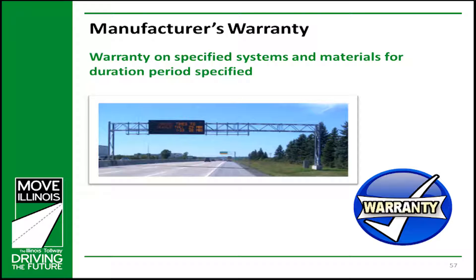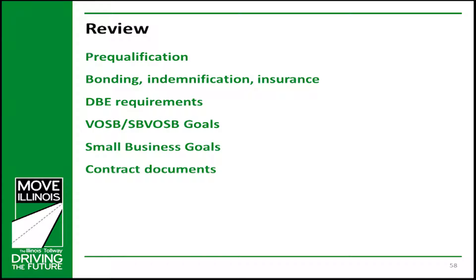Manufacturer's warranties apply to specified systems or products in the contract. Examples include dynamic message signs, electrical systems inside luminaries, and asphalt shingles. So far we have covered prequalification, bonding, indemnification, insurance, DBE requirements, VOSB/SDVOSB goals, small business goals, and contract documents. Now we would like to get into the construction contract bid submittal.